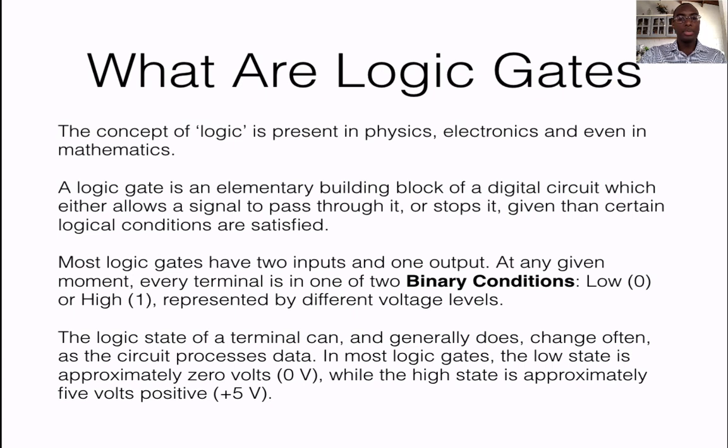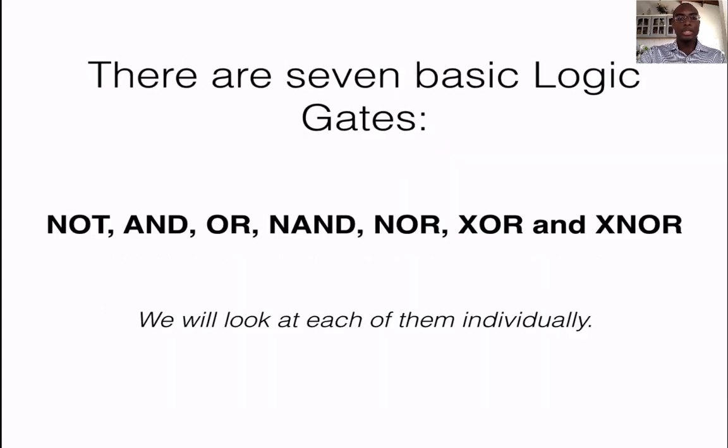Most logic gates have two inputs and one output and at a given moment every terminal is in one of two binary conditions: 1 or 0, 1 representing high, 0 representing low, characterized by differences in voltages. The logic state of a terminal can and generally does change often as the circuit processes data. In most logic gates the low state is approximately 0 volts while the high state is approximately 5 volts. There are seven basic logic gates.